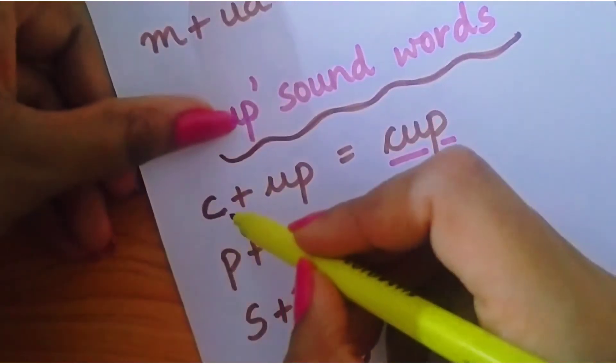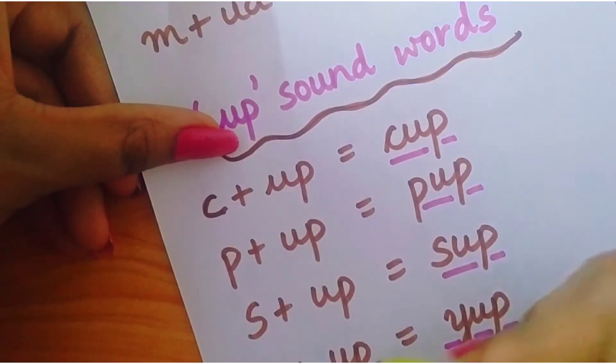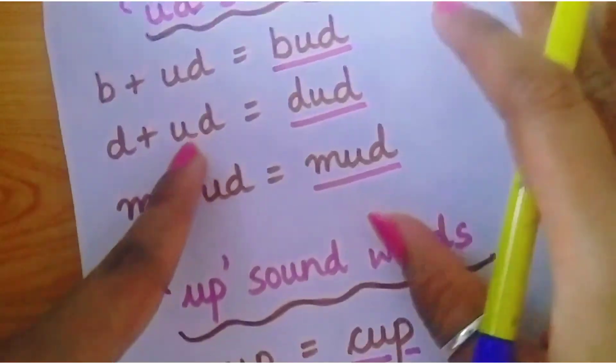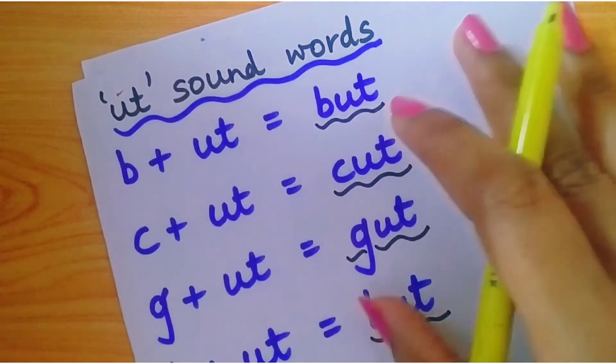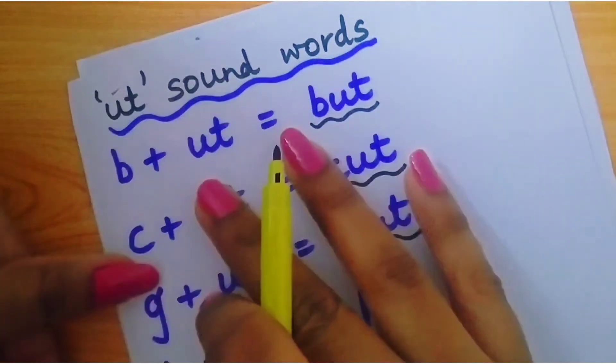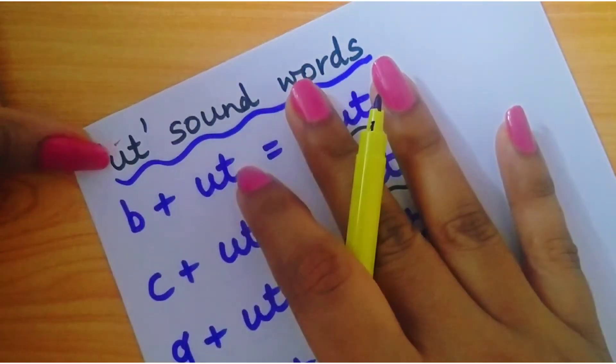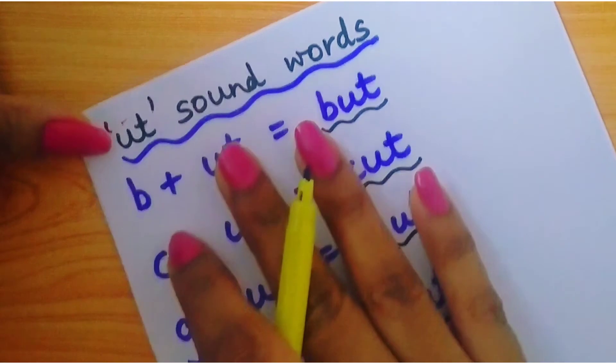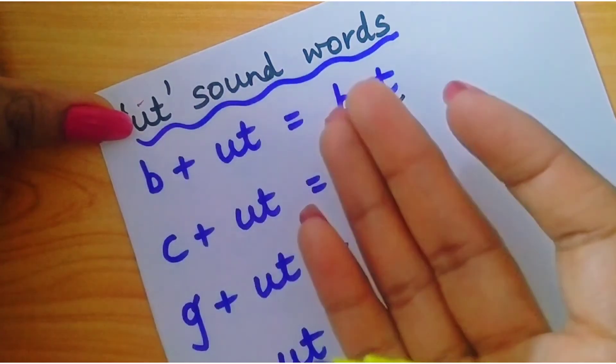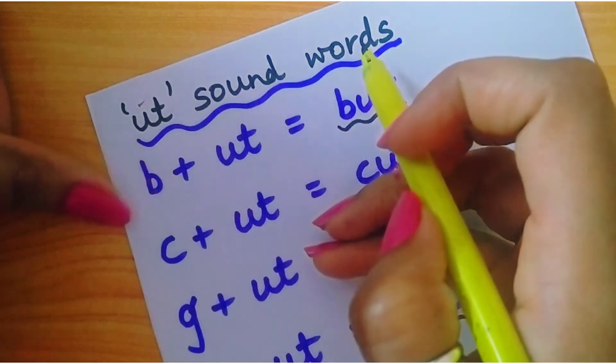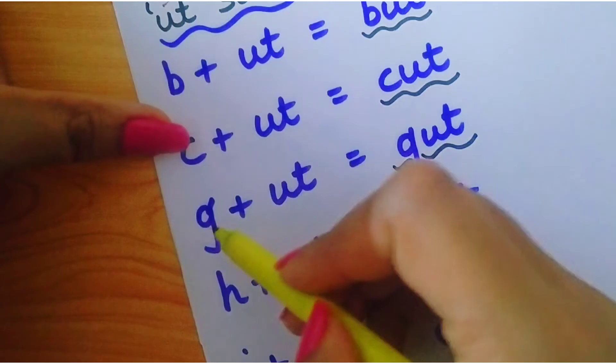मेरा सजेशन आप सबको यही है कि आप सबसे पहले बच्चों को sound words आप उन्हें learn करवाए a, e, i, o and then you have to come in u sound. ठीक है आप बच्चों को pressurize नहीं करेंगे. बच्चा अपना time लेके जैसे वो उसे learn होता है तो आप उसे करने दीजिए. वो धीरे धीरे अपना time लेके familiar हो जाएगा इन words से. अगर उसे phonic sound clear है तो वो यह वाले sounds भी easily read कर पाएगा. ut sound words ब ut बट, क ut कट, ग ut गट, ह ut हट, ज ut जट, न ut नट, र ut रट.